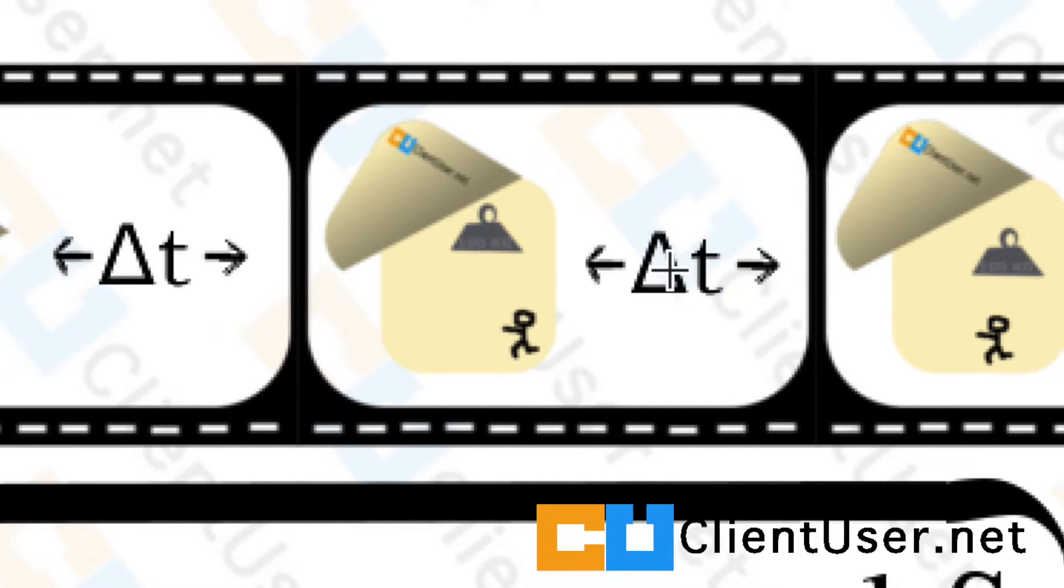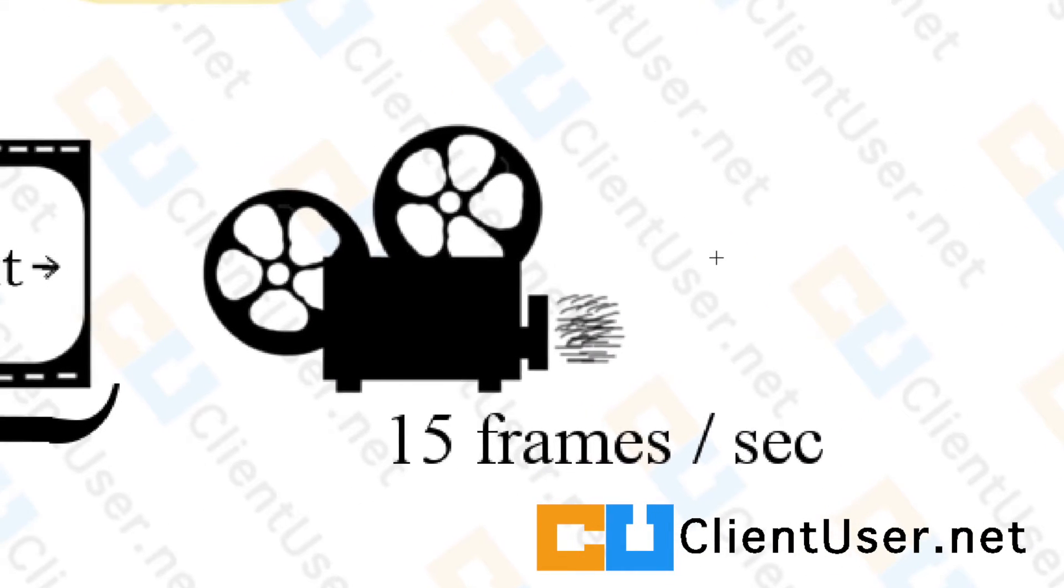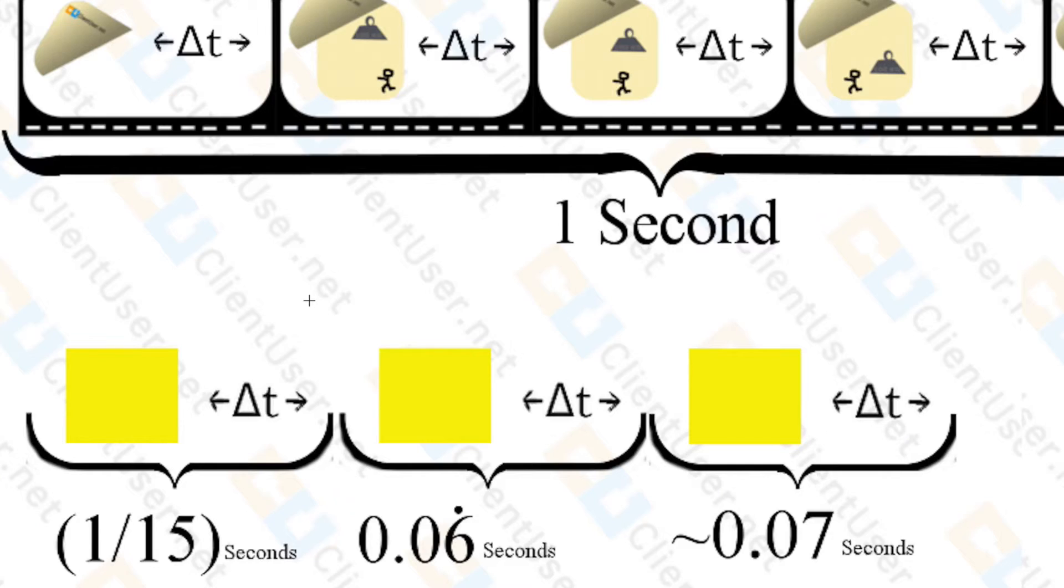And instead of zipping straight onto the next frame, what you can do is calculate this delta t and pause. But how long would this frame be? Well, I'm going to go for 15 frames a second, and we'll change that number and play with that in later tutorials. So at 15 frames a second it means one of these film segments is going to be 0.07 seconds long.